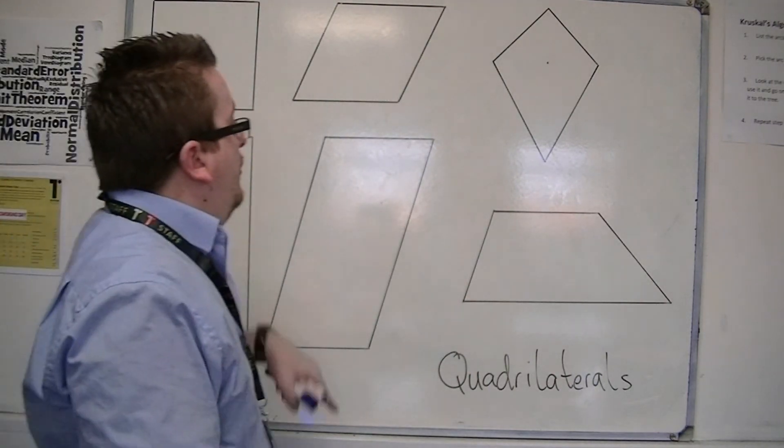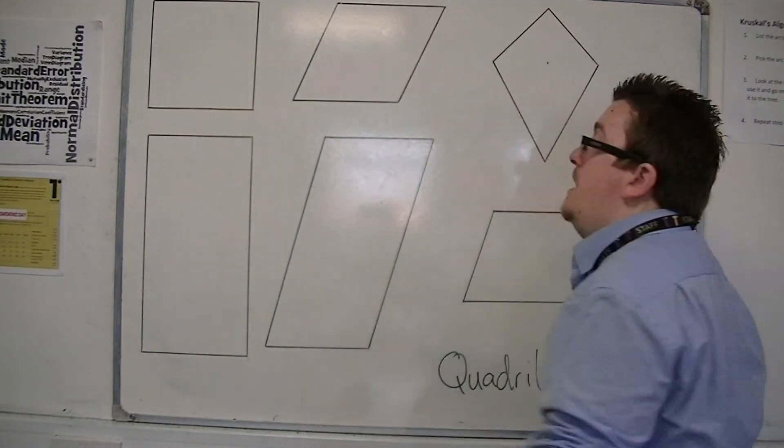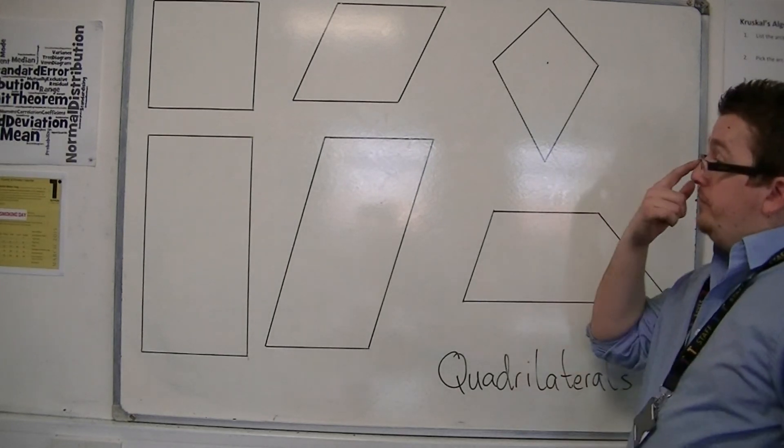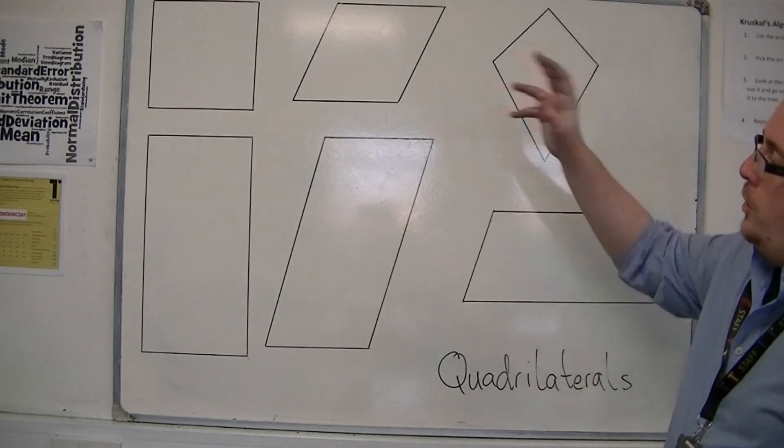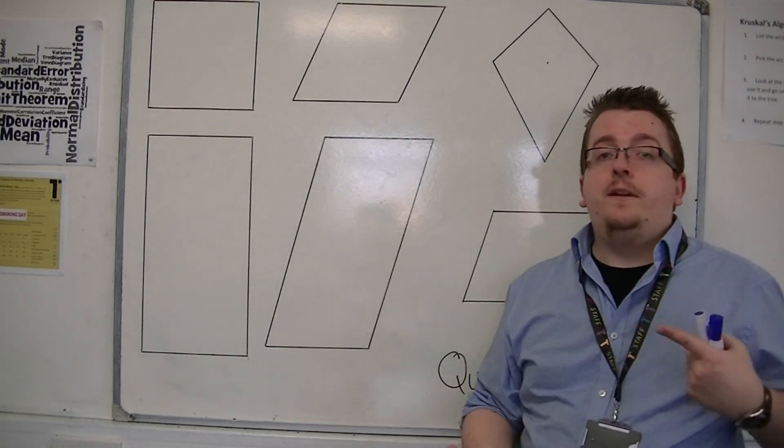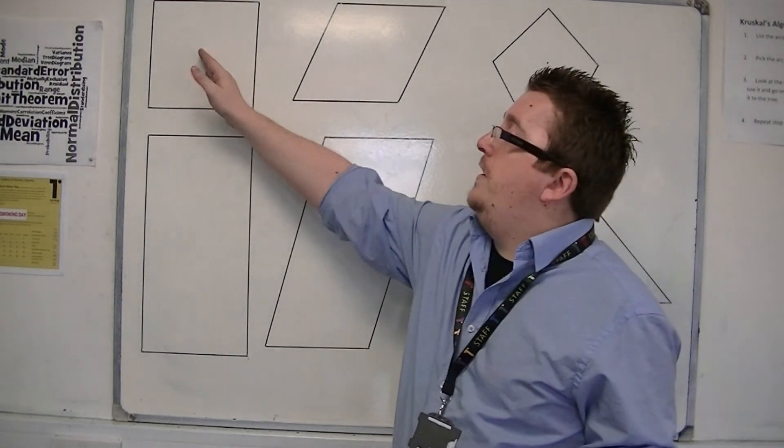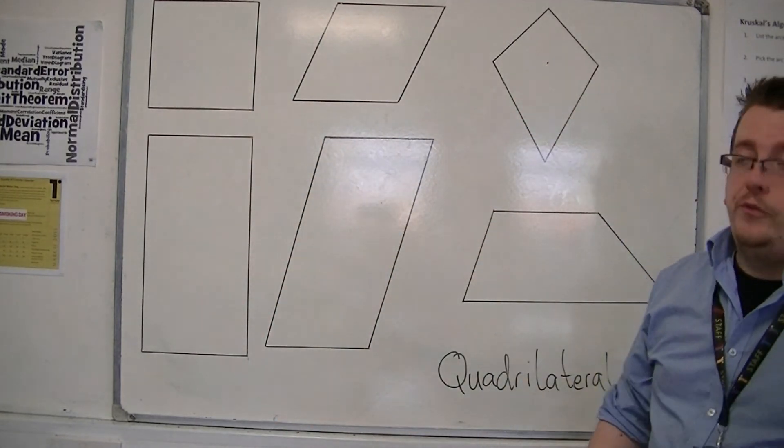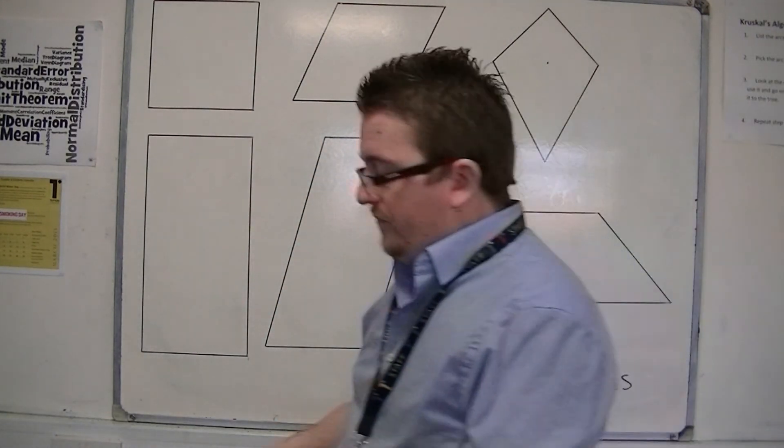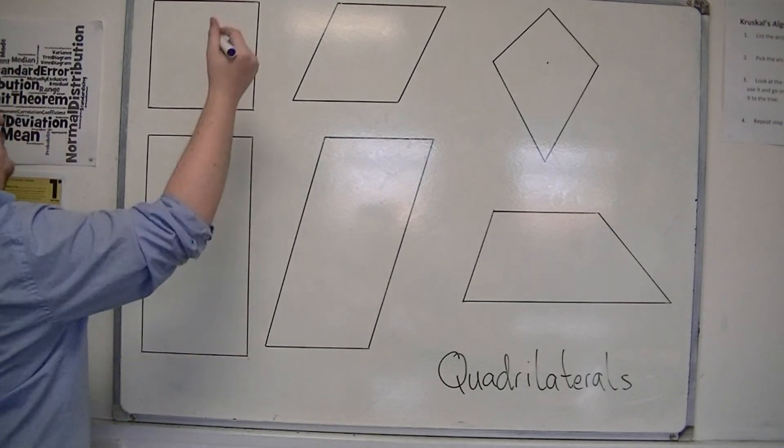And these represent the different types, the different named types that we use. I'm going to go with each one in turn and be identifying their special properties. So we're going to start off with this one up here. This of course is the square.